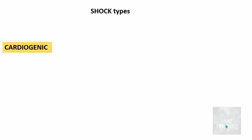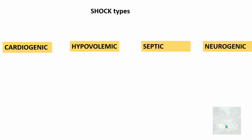What are the different types of shock? Shock can be classified into cardiogenic shock, hypovolemic shock, septic shock, and neurogenic shock.